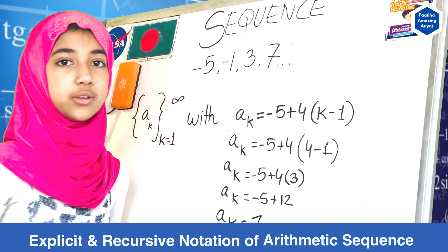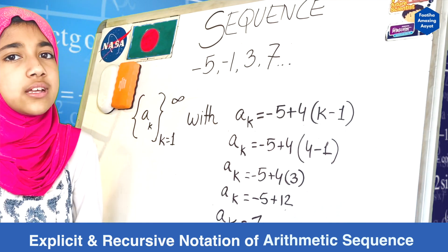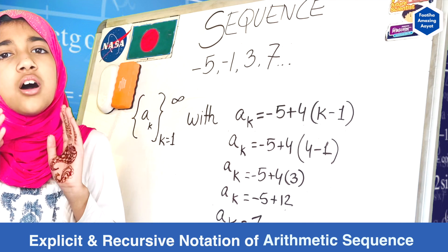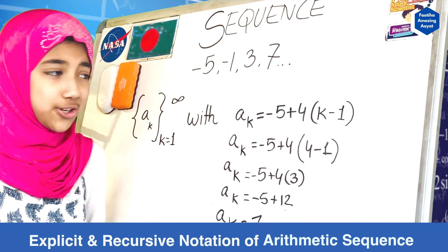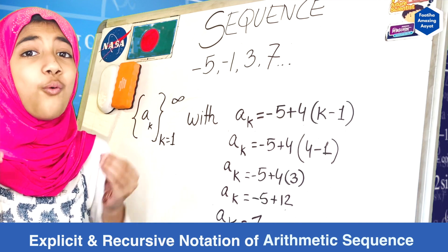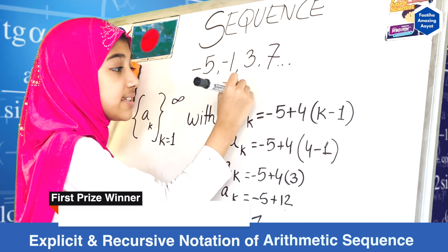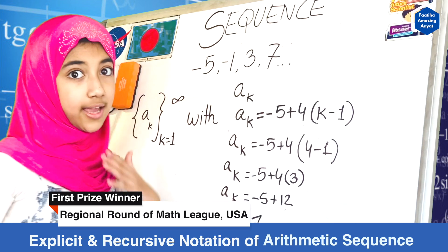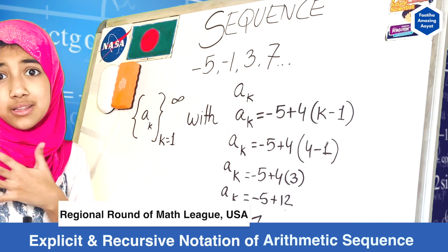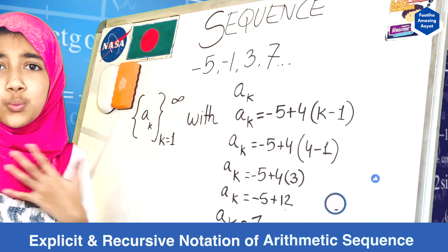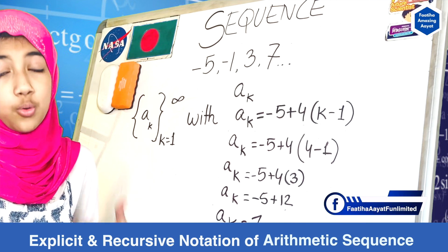So dear viewers, this is the formula that we did, but now I'm going to show you what the real formula is. Because all of the time we're not going to use minus five and four, right? You're going to have to remember a formula. So I'm going to write that down: a sub k. I told you before that you can do any variable letter you want; we're going with a sub k because it's most commonly used.